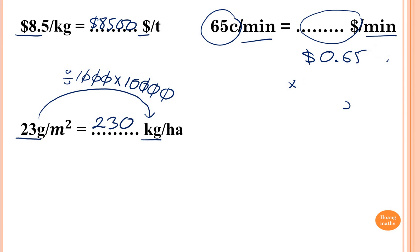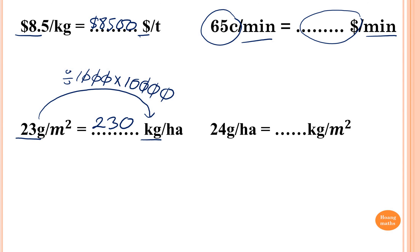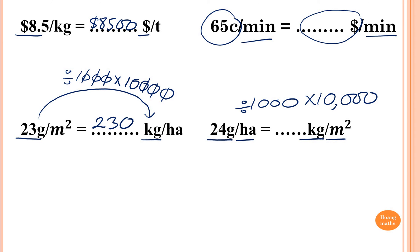The last question uses the same process. From 24 grams to kilograms, I divide by 1,000. But from hectare to square meters, you times by 10,000. Because the first operation is divide, the second must be times. And because 1 hectare is 10,000 square meters, I times by 10,000. So the answer is 240 kilograms per square meter. Thank you so much for watching.